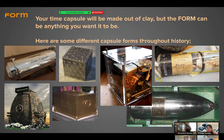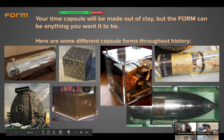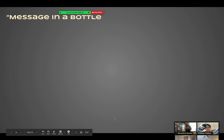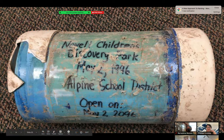Your time capsule will be made out of clay, but the form can be anything you want — it doesn't have to look like a traditional time capsule. A lot of them are bullet-shaped, long and skinny, because they're buried vertically in the dirt. Some have a plaque on top that sits level with the earth, kind of like a tombstone, saying who made the capsule and the date it should be opened. I'm going to teach you how to build something out of clay using slabs.